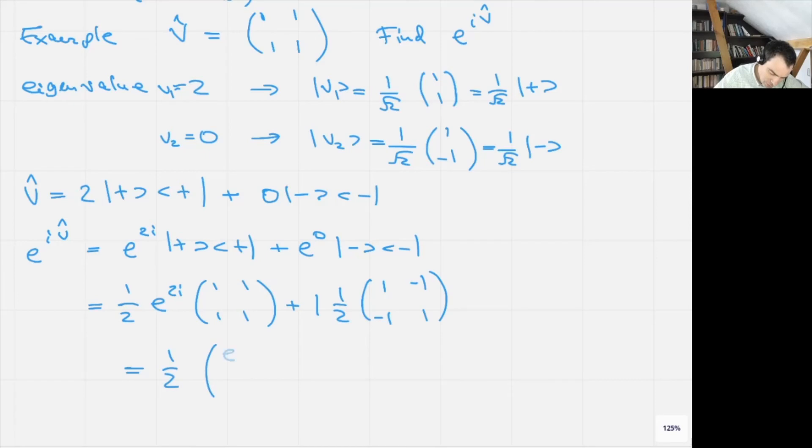The matrix with (e^(2i)+1, e^(2i)-1; e^(2i)-1, e^(2i)+1). That's my result, that's the exponent of this matrix.